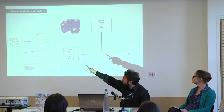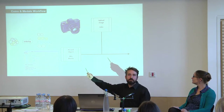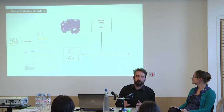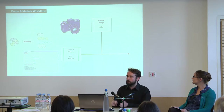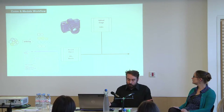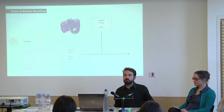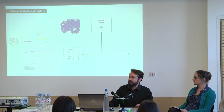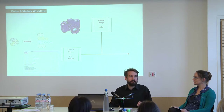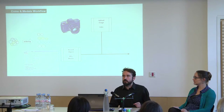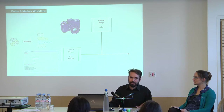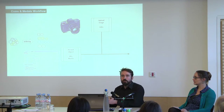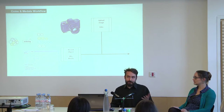First, you have to put objects in order before you can do anything else, because the data we record is not inherent in the objects — it's created by our taxonomic processes. A good example is diameter. Ancient coins do not have a diameter; circles have diameters and ancient coins are not circles. Yet every coin that goes into the database gets a diameter, which means you have to decide which measurement to take and how to take it — rulers, calipers — before you can actually input data.